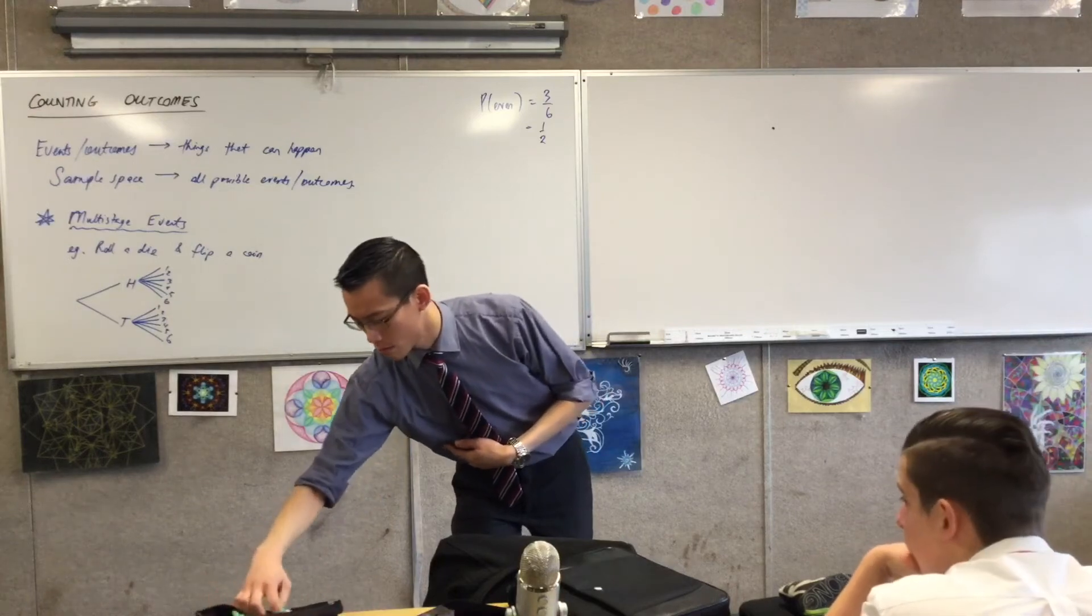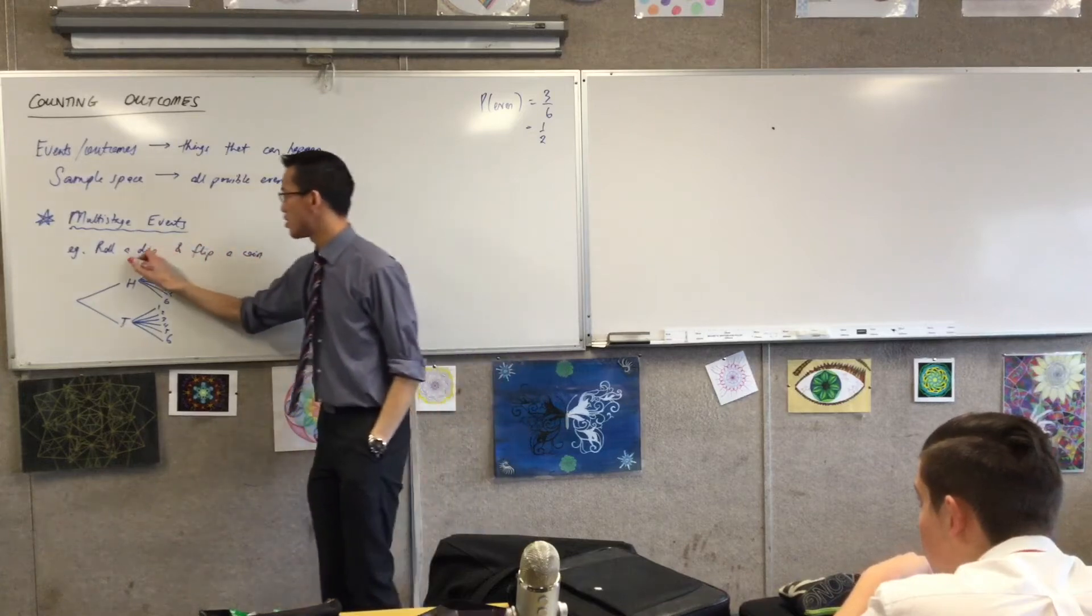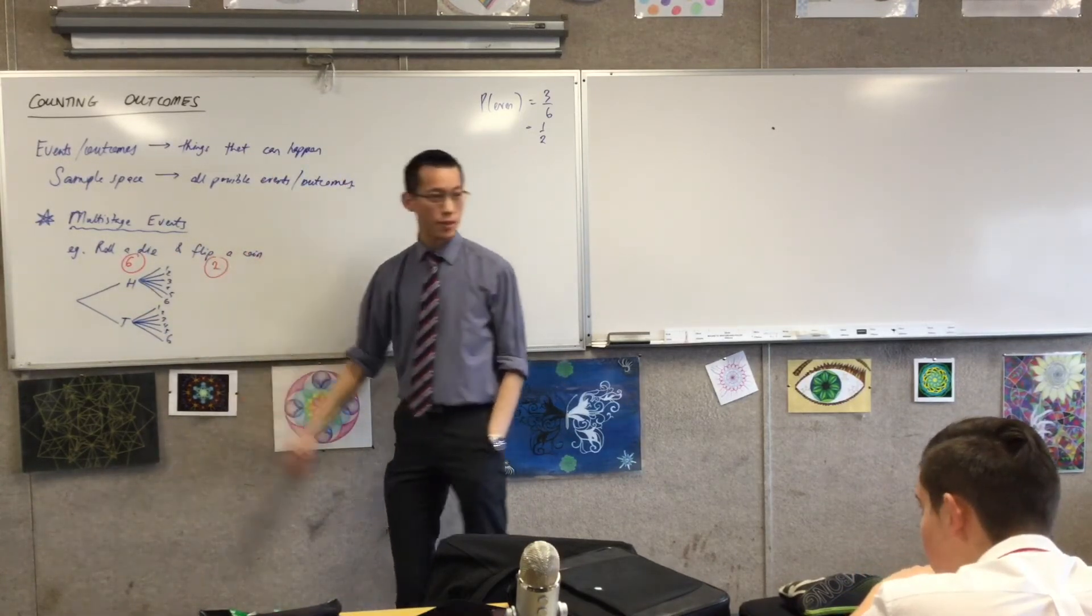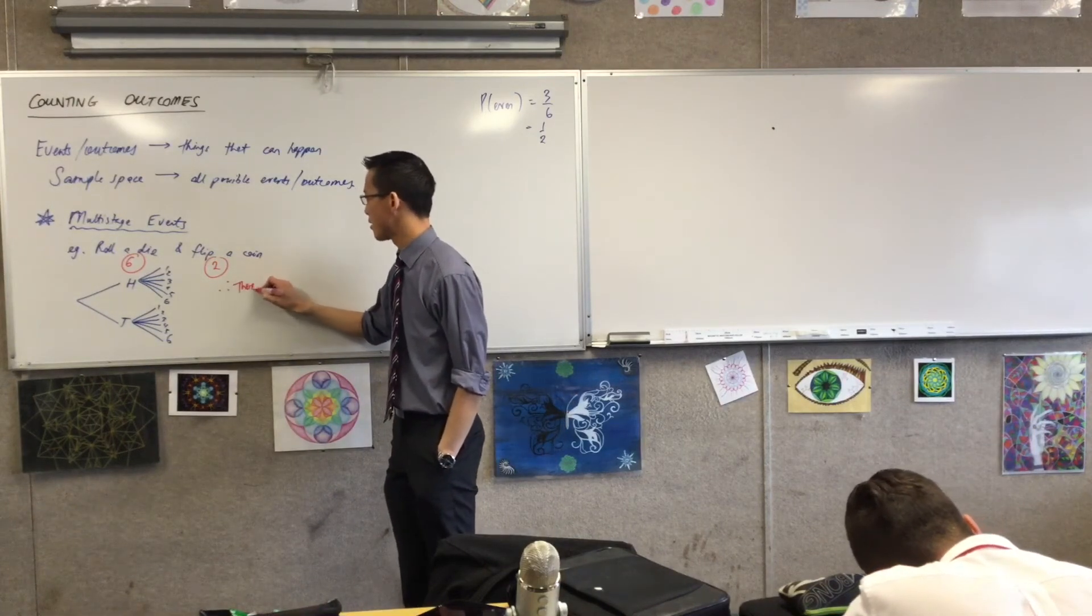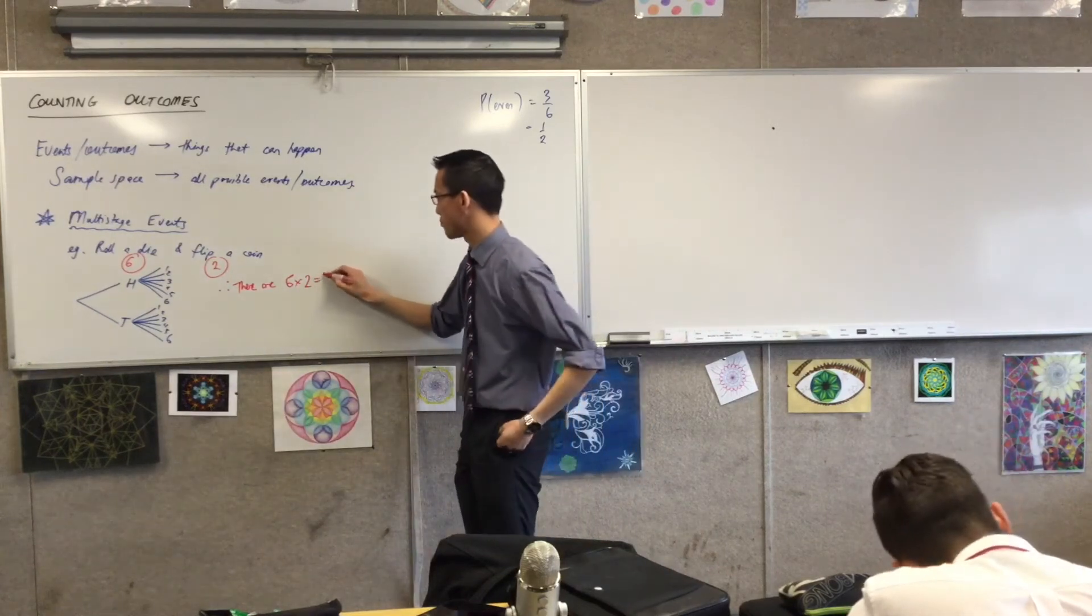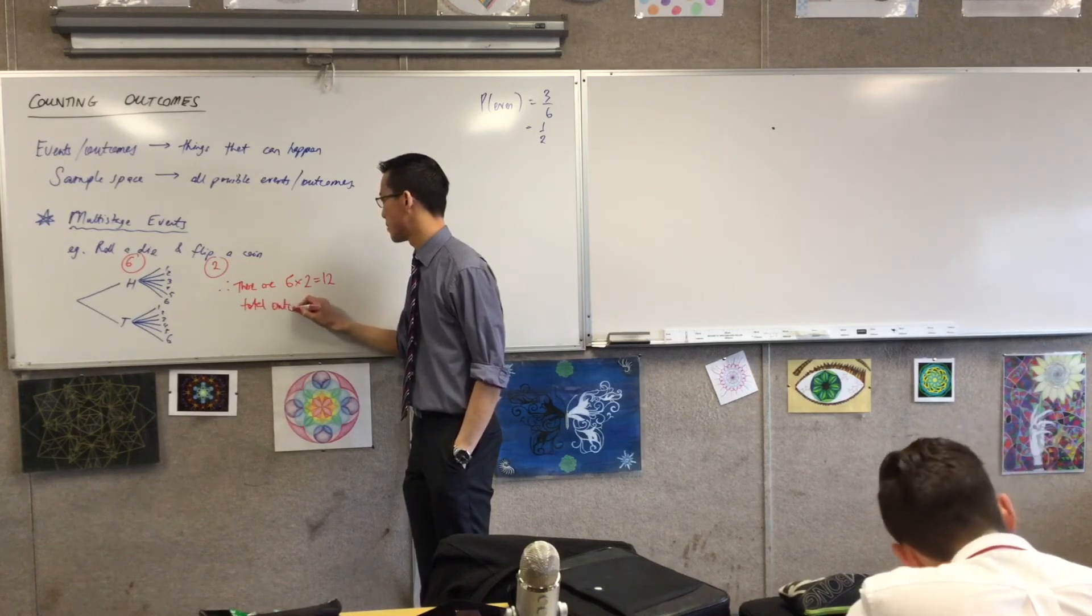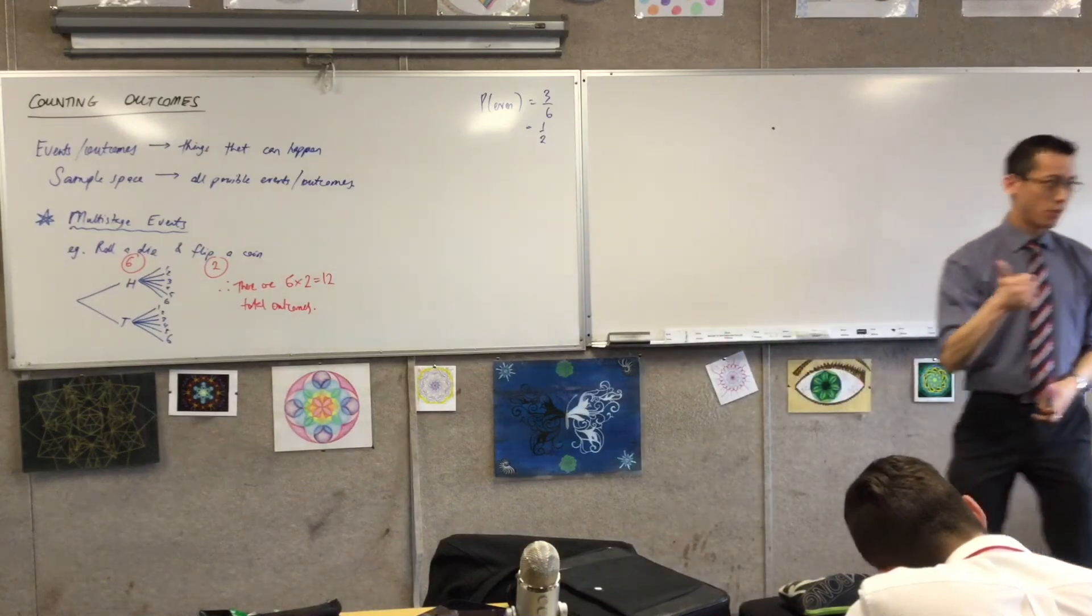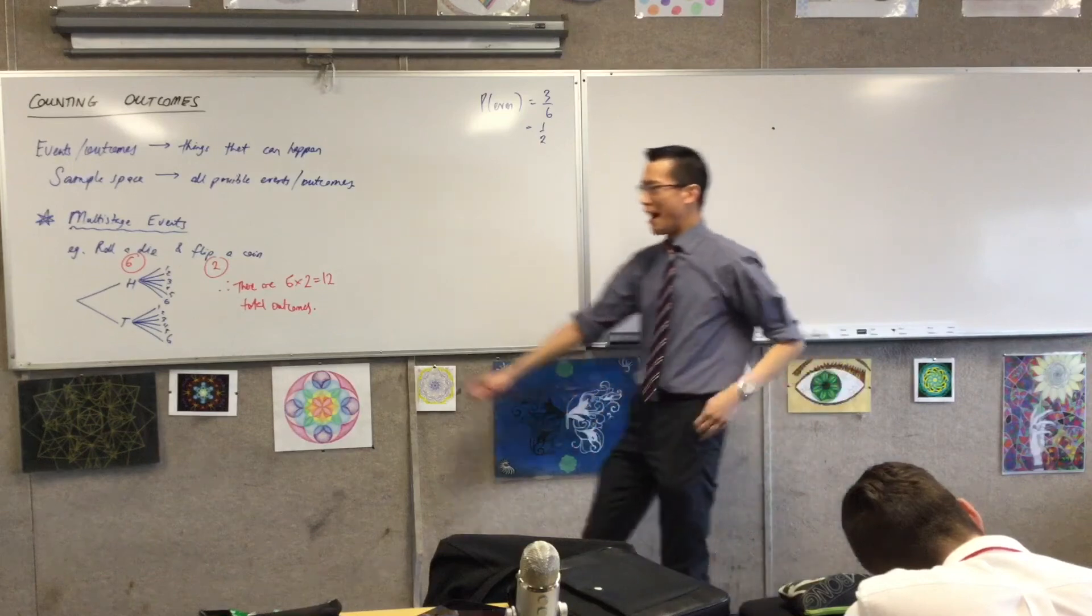If you want to work out the number of total outcomes, which there are twelve, all you need to do if you roll a die and flip a coin, there's six ways to roll a die and there are two ways to flip a coin. Right? So therefore, there are six times two, which as we just said is twelve.